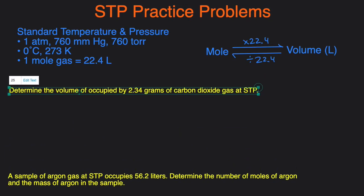In the next problem, we have to determine the volume occupied by 2.34 grams of carbon dioxide at STP. Once again, we're at STP. We have to figure out the volume and we're given grams.